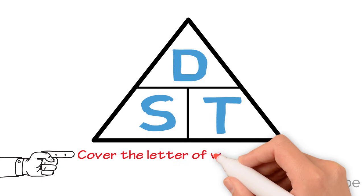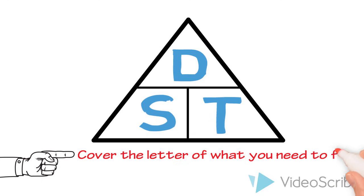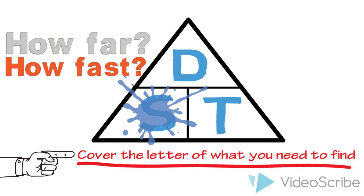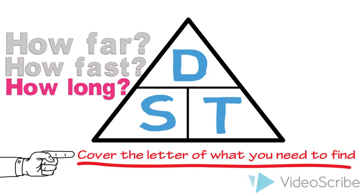You find the formula you need to use by simply covering up the letter of what it is you need to find. If the question asks you how far something travelled, you cover up D. If you are asked how fast, cover S. And for questions asking how long, cover the T for time.